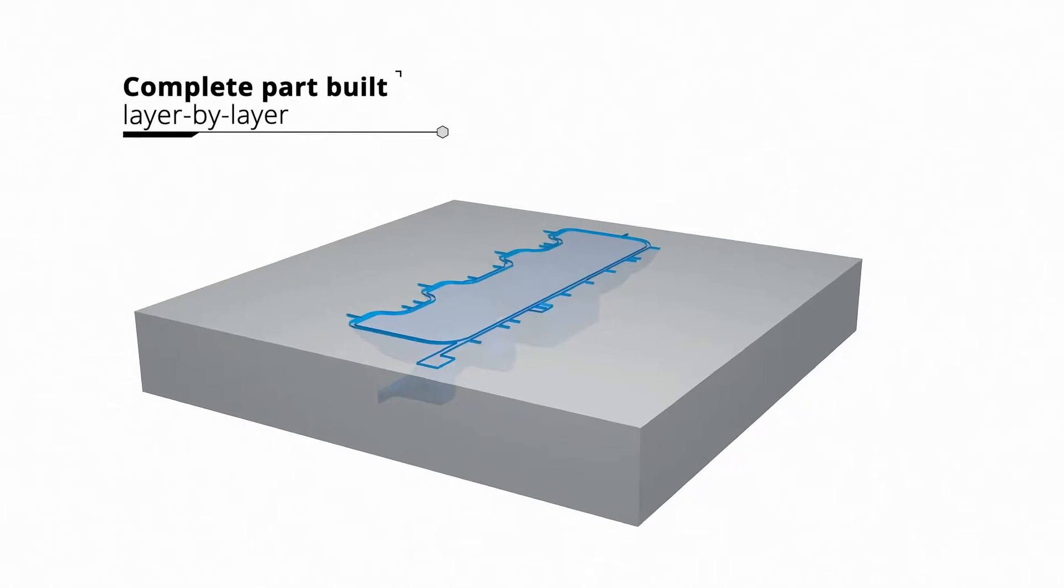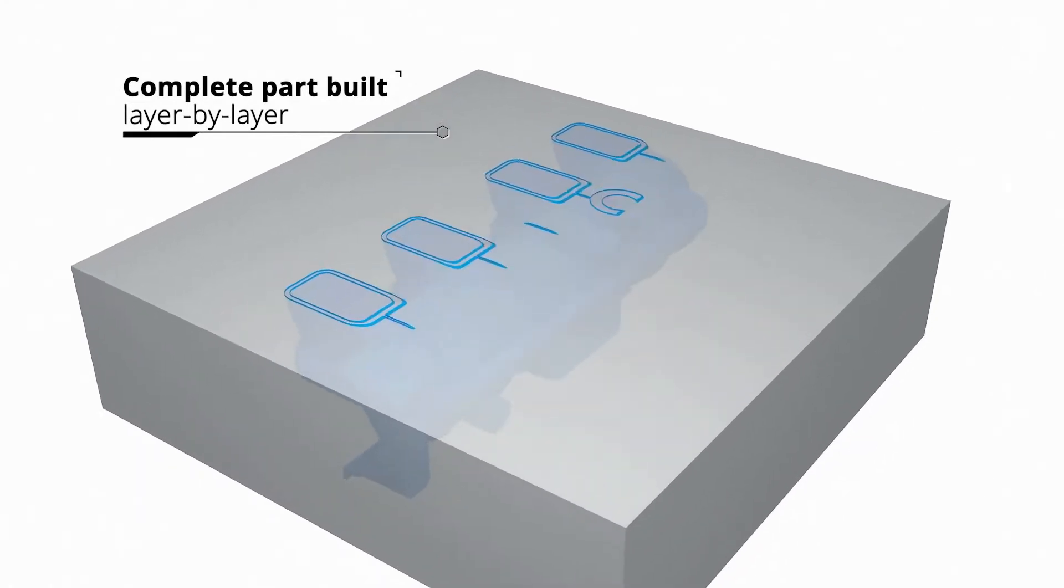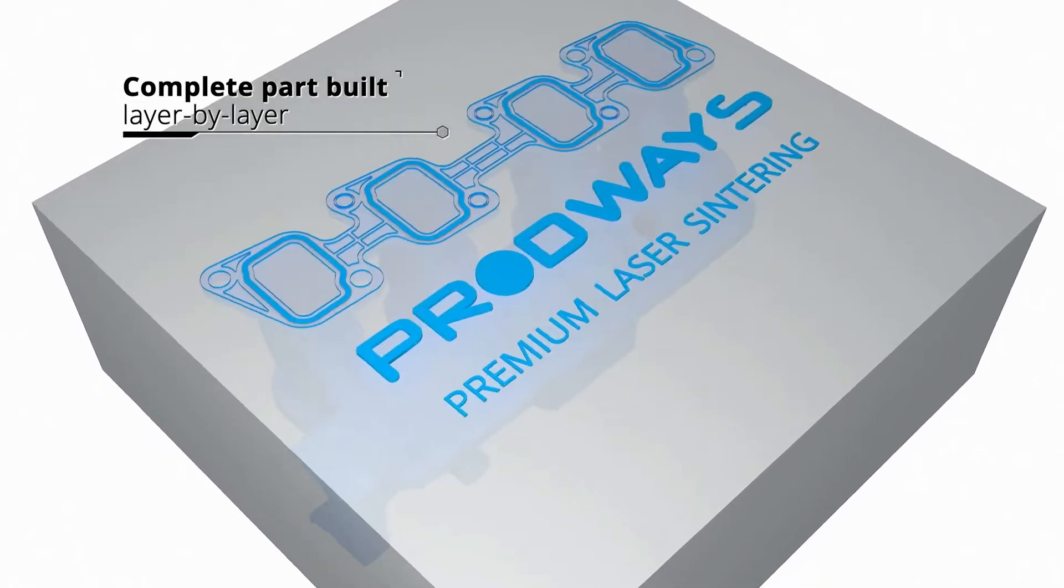After a single layer is scanned, the powder bed is lowered and a thin layer of new material is applied and rolled out smoothly.